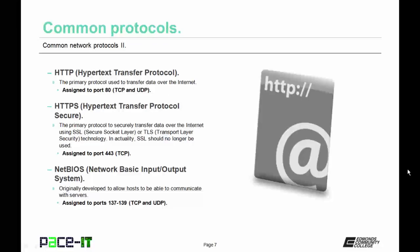Then there's NetBIOS, which is Network Basic Input Output System. It was originally developed to allow hosts to be able to communicate with servers. It's assigned to ports 137 through 139, and it can use TCP or UDP as its transport protocol.